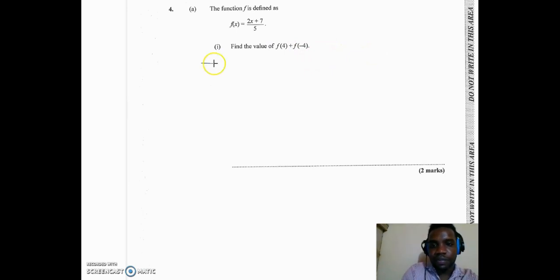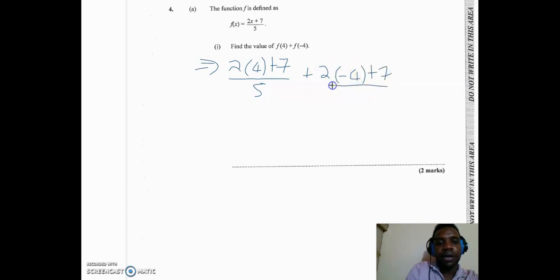So this would imply 2 times 4 plus 7 all over 5 plus if I put in minus 4, I'm going to have 2 times minus 4 plus 7 all over 5. Now we just simply work these out. 2 times 4 plus 7 would give me 15 over 5 plus 2 times negative 4 would be negative 8 plus 7, negative 1 over 5.